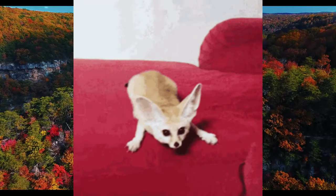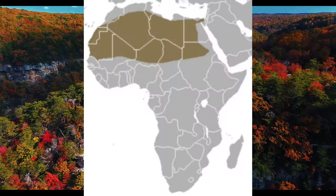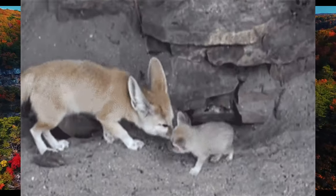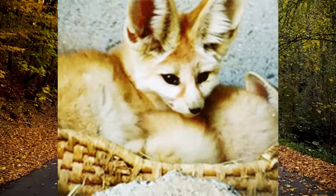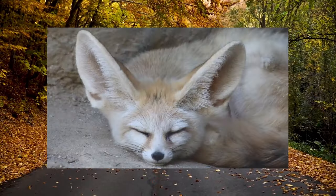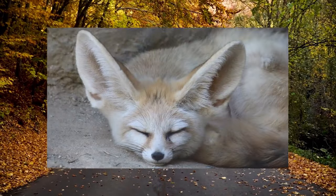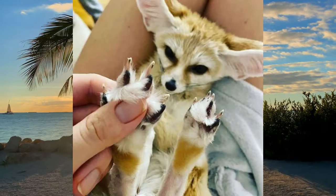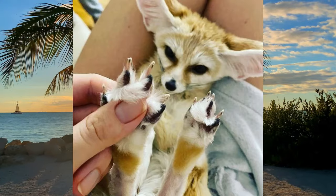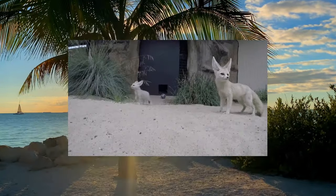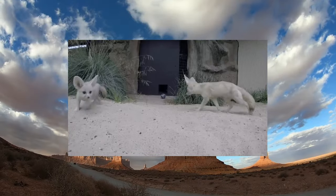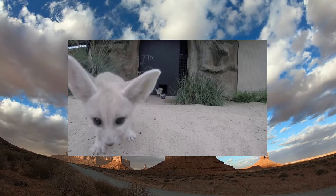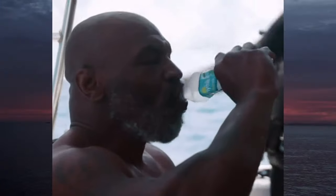Fennec foxes are just the darn cutest, aren't they? They're native to Saharan Africa and are well adapted to living in the desert. The color of their fur reflects the rays of the sun during the day and helps keep them warm on freezing desert nights. Their ears are absolutely stuffed full of fur, helping keep the sand out when they enter their burrows. Their paws are also extremely furry, keeping the sensitive pads safe from the scorching desert sands. They get most of their moisture from their food, which includes just about anything that can fit in their mouths, but they won't turn down a nice frosty glass of H2O if you offered them.